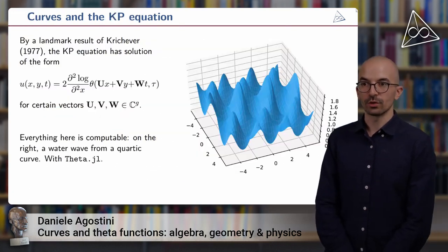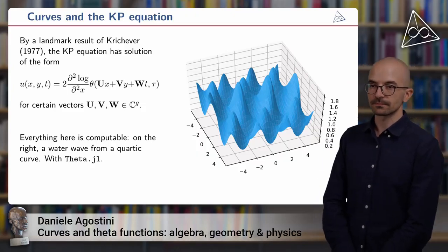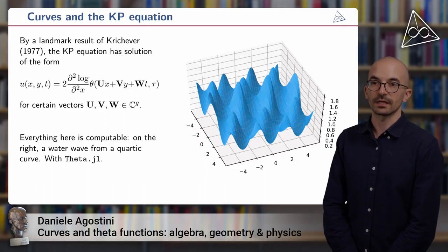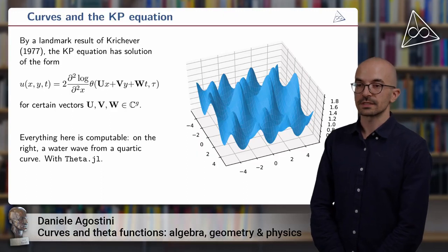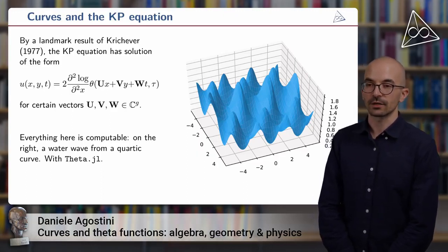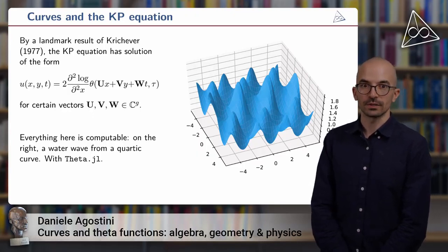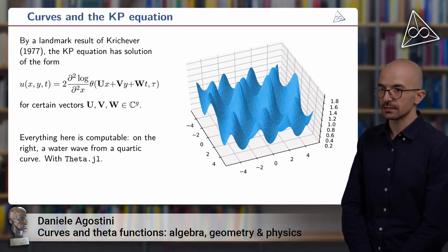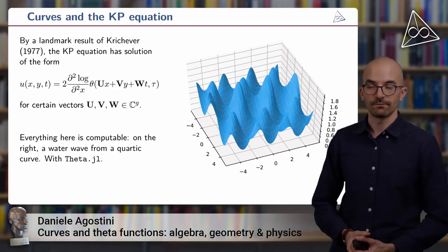Okay, let's come now to our water waves. Well, this is a result of Krichever from the 70s that if you have a smooth curve of genus g and the corresponding Riemann matrix tau, then you can find a solution of the KP equation of this form. So it's like a second logarithmic derivative of the theta function where you replace the argument z with a linear combination ux + vy + wt, and this for a certain choice of the vectors u, v, and w.